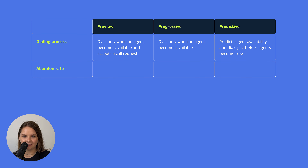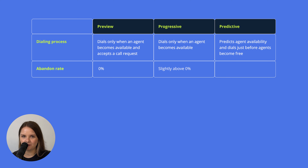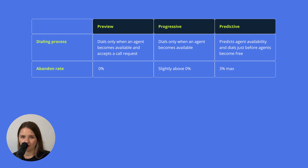Abandon rate is the percentage of calls when a contact decides to hang up before an agent is connected to the call. With the Preview mode, it's zero, because the call starts when the agent is ready for it. It's slightly above zero with Progressive, as there might be a chance of a contact waiting if they immediately pick up the phone. The abandon rate for the Predictive dialer is 3% max — you can change it in the settings, but it is strongly recommended to be 3% at most. If the value is lower or higher than the predetermined percentage, the algorithms will readjust the number of calls made.